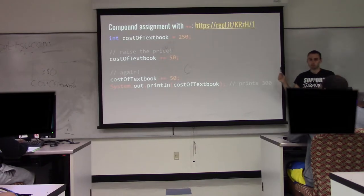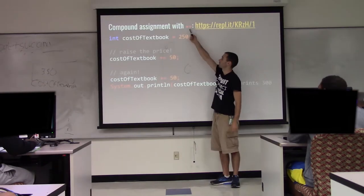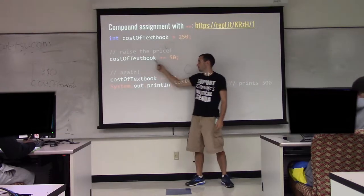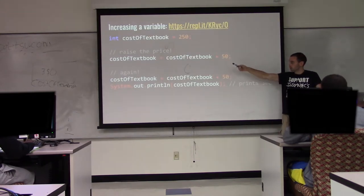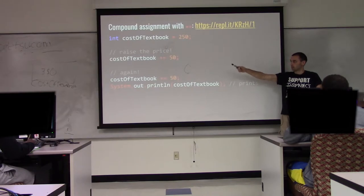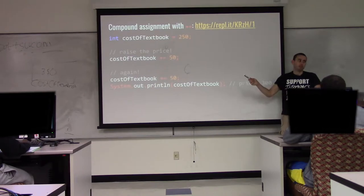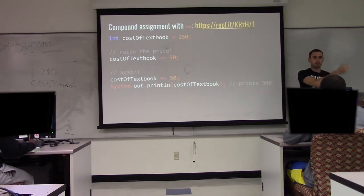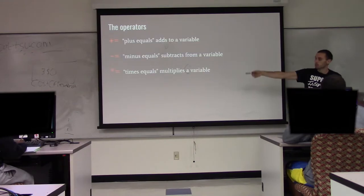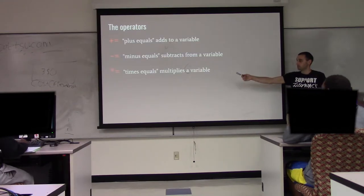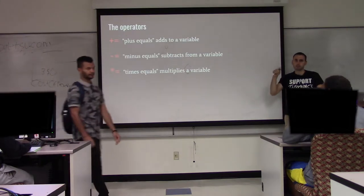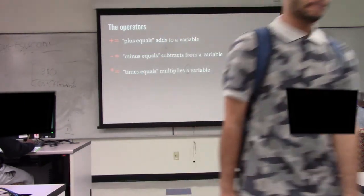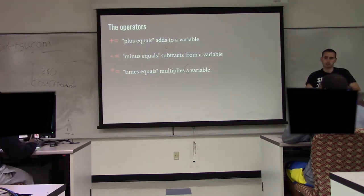Because this kind of operation is so common, there is actually a shorthand for it. The plus-equals operator: read 'cost of textbook plus equals 50' — it's semantically equivalent to 'cost of textbook equals cost of textbook plus 50'. These operators will help you out a lot for increasing, decreasing, or doubling variables. The most frequently used ones are plus-equals, minus-equals, and times-equals. These are called compound assignment operators.